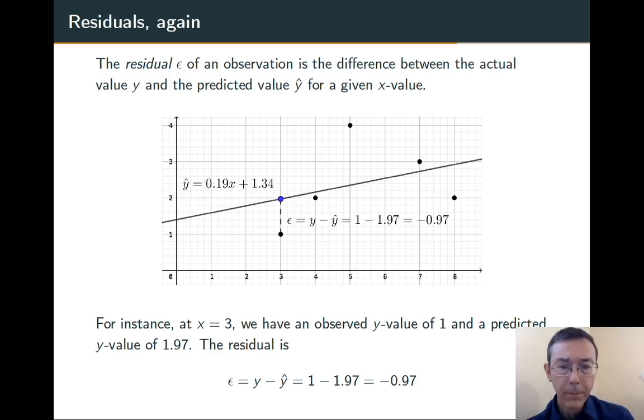The word we use here is residual. The residual of a value or a point in the data set is the difference between the actual y value at that point and the one predicted by the regression line. So at x equals 3, the actual minus expected is 1, the actual y value for the point, minus 1.97, the y value predicted by the regression line. So the point 3 comma 1 has a residual of negative 0.97, meaning that the point lies 0.97 units below the regression line.